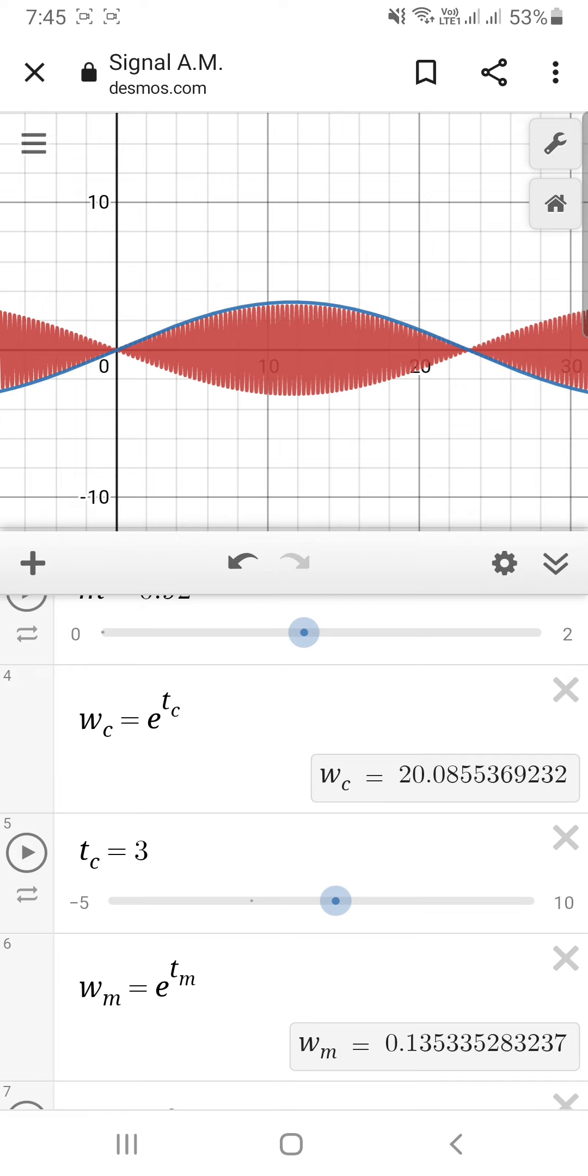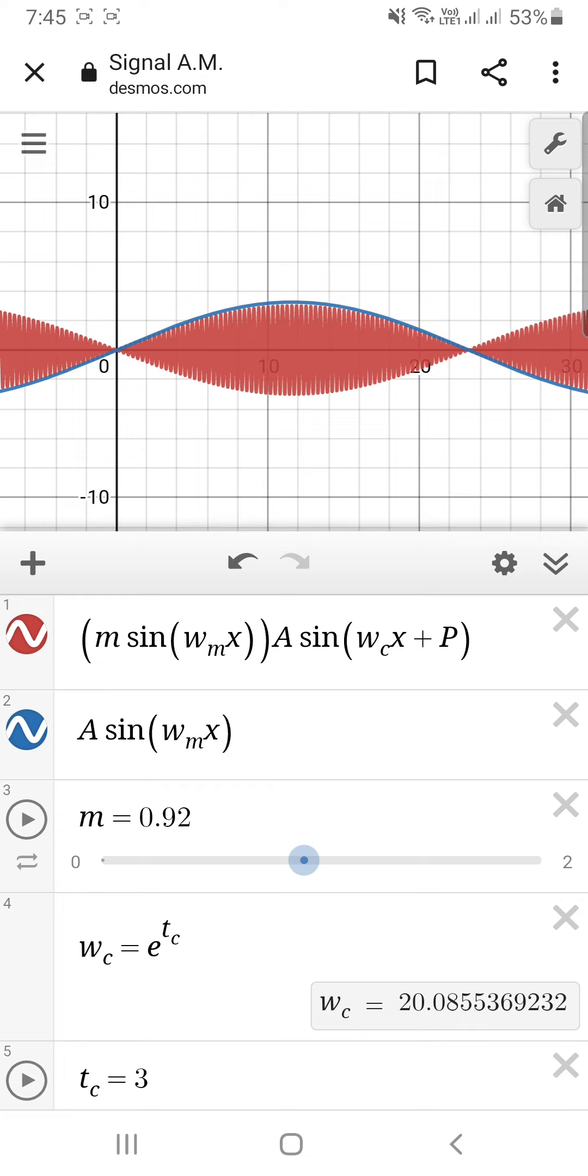So what did I do? This red curve, it's still a sinusoidal curve except that its amplitude is continuously changing. So the equation for this red curve is M sin(ω_m x) times A sin(ω_c x + p). So this A sin(ω_c x + p), that's our blue curve.